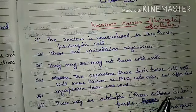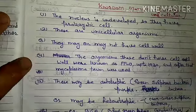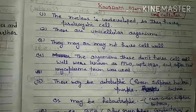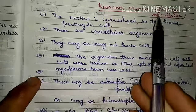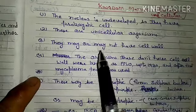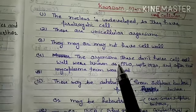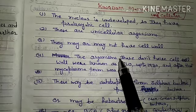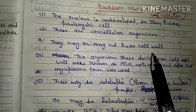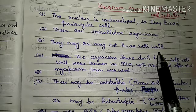They may or may not have a cell wall. On the basis of this, Kingdom Monera is further divided into Archaebacteria and Eubacteria. In Archaebacteria, the cell wall does not have peptidoglycans. But in the case of Eubacteria, they have peptidoglycans in the cell wall.